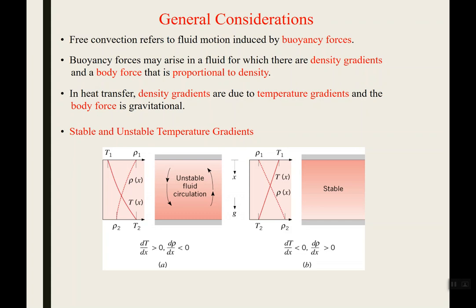You can have stable and unstable temperature gradients. If you have a column of fluid with warmer fluid on the bottom and colder fluid on top, that warmer fluid is less dense and will circulate upward, while the colder fluid circulates back down to the bottom. By inducing uneven heating, you're actually going to start having flow happen — having these temperature and density gradients induce fluid motion, which is where free or natural convection comes from.